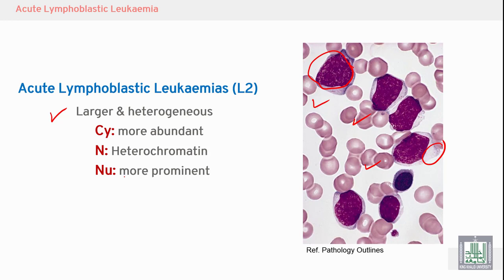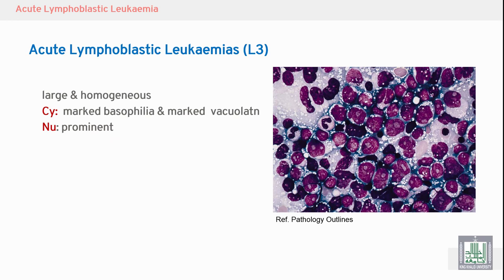L3 features large, homogeneous cells — all cells are similar to each other and large. The cytoplasm shows marked basophilia, seen as a blue color throughout. There is also marked vacuolation — white spaces visible inside the cytoplasm. Nucleoli are prominent in all cells.